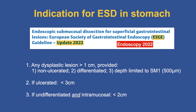For the stomach, the indications for ESD are: first, any dysplastic lesion larger than 1 centimeter, provided it is non-ulcerated, differentiated on histology, and depth is limited to SM1 — that's 500 microns. If it's ulcerated, we limit ESD to lesions smaller than 3 centimeters. If it's undifferentiated and intramucosal — meaning poorly differentiated but limited to the mucosa — you can do ESD if it's smaller than 2 centimeters.